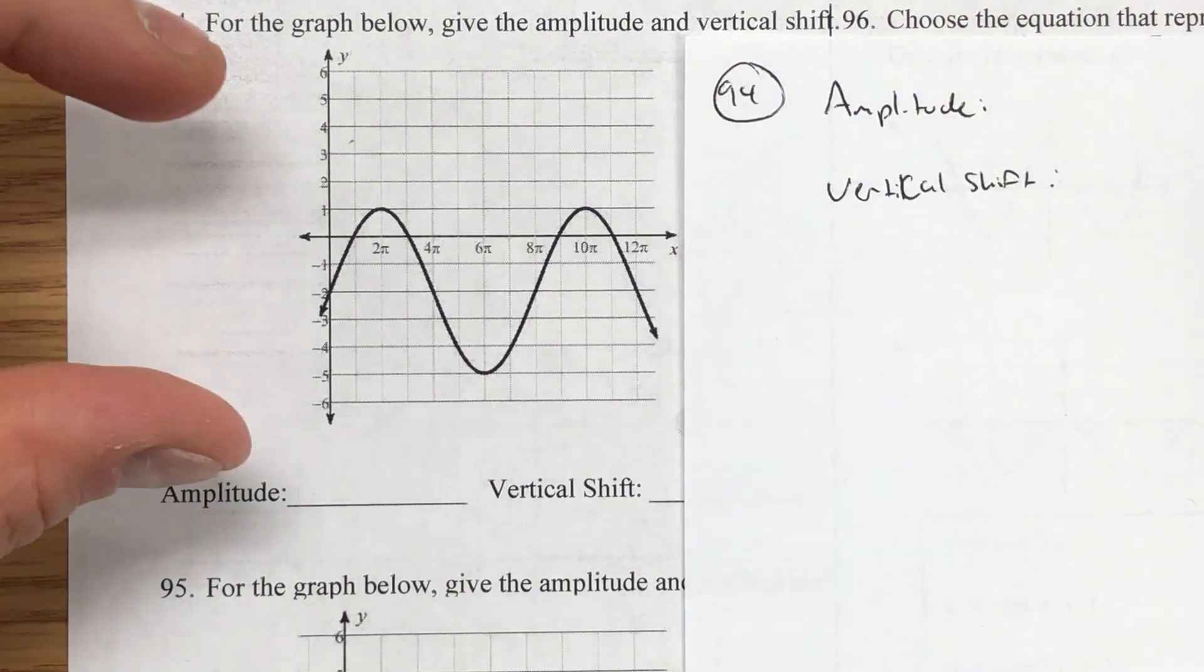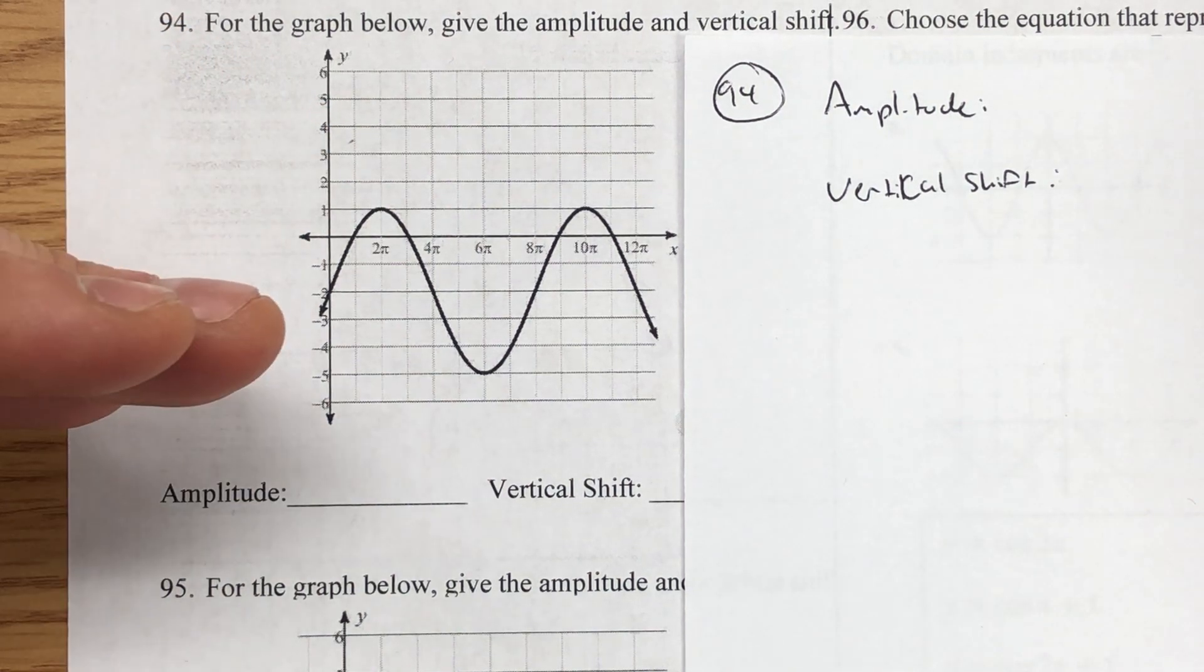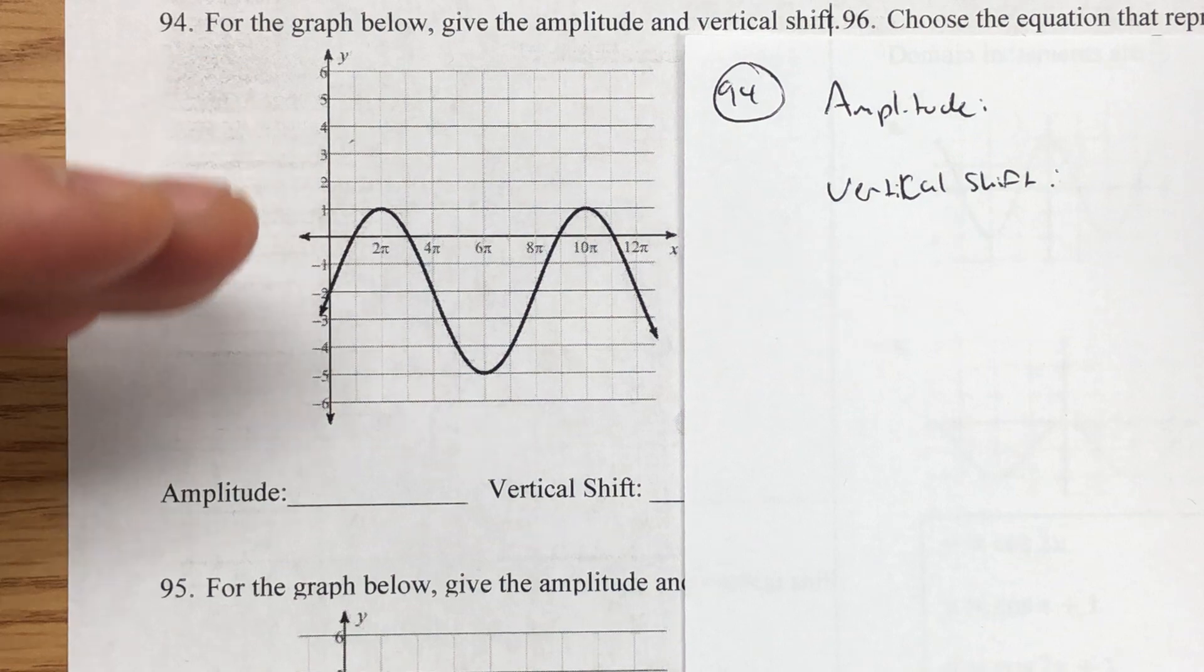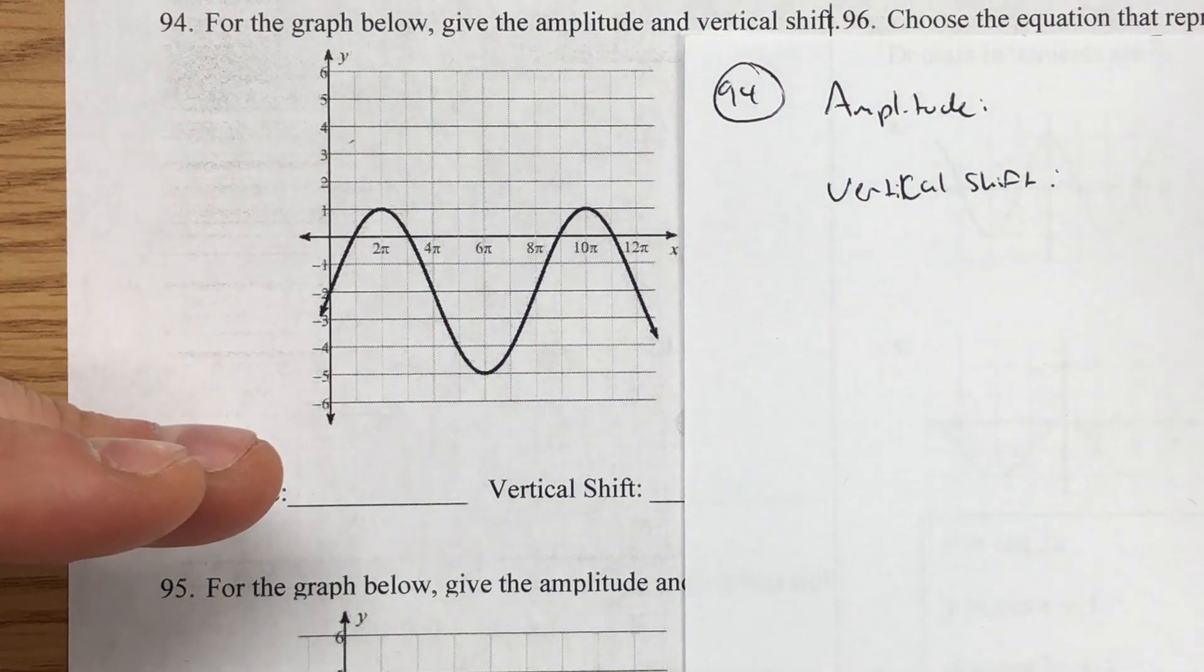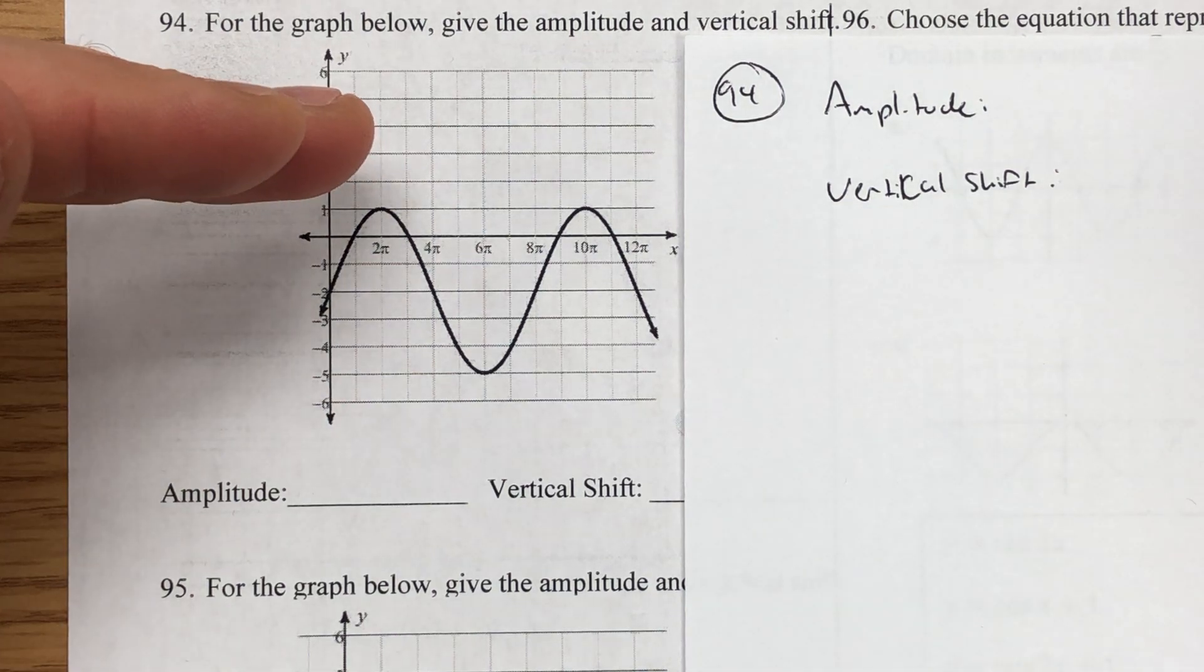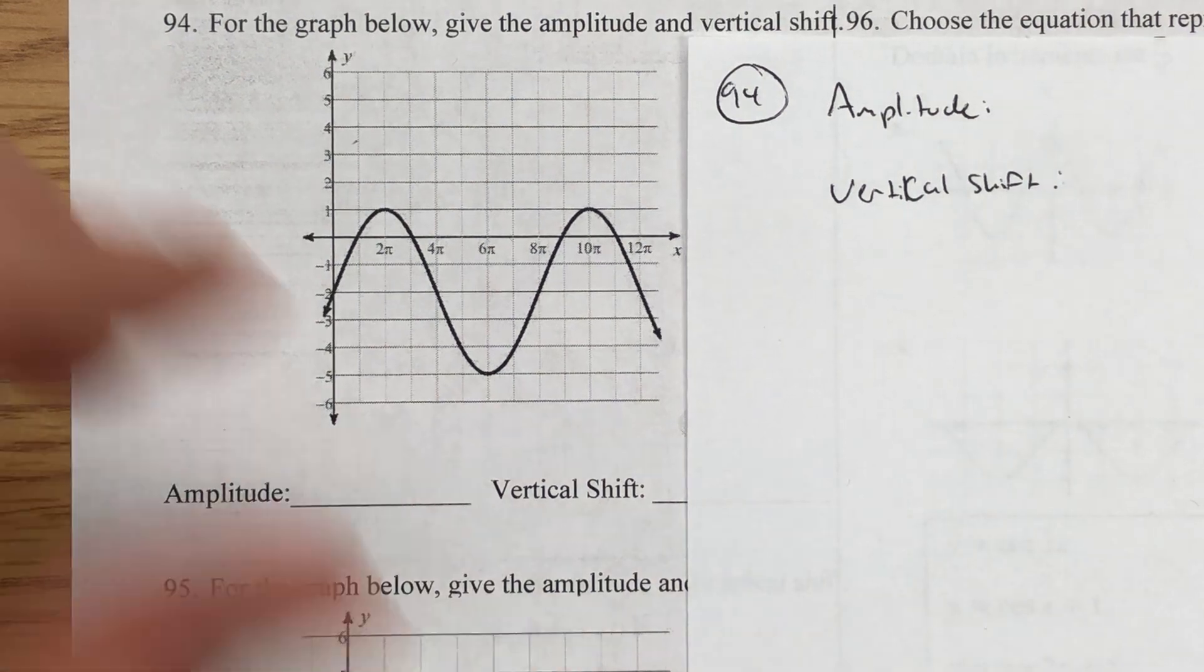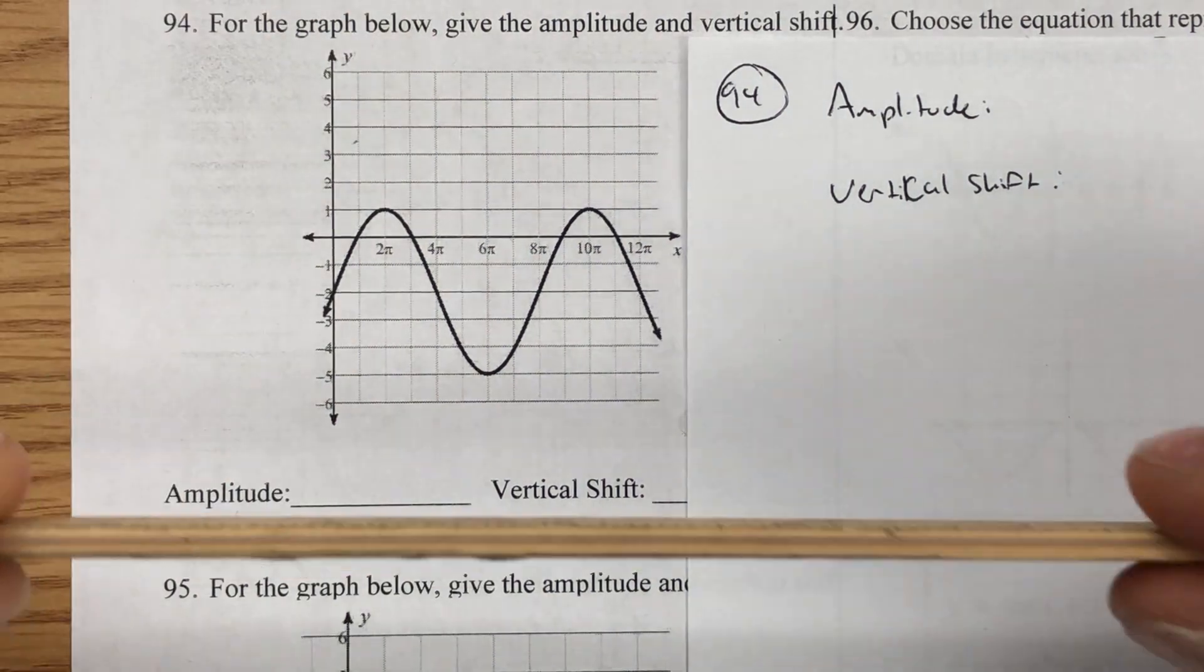Okay, so the amplitude is going to be based off of what is the distance from the midline to the maximum height and from the midline to the maximum depth. A different way to interpret that is what is the distance from the top to the bottom divided in half. In essence, let's go ahead and separate this into two graphs.